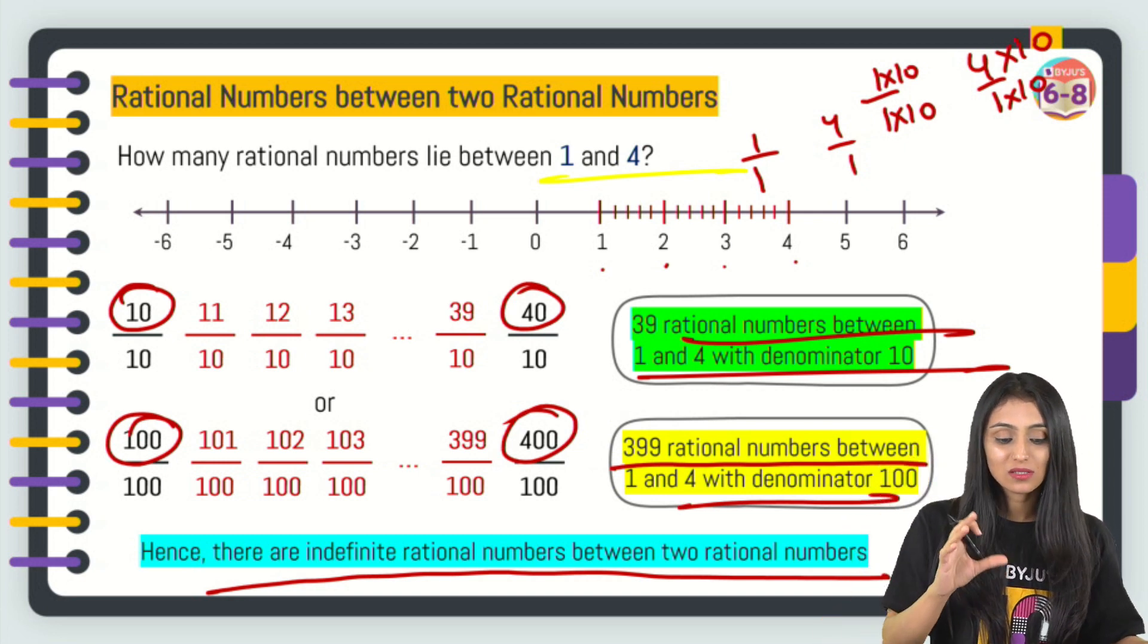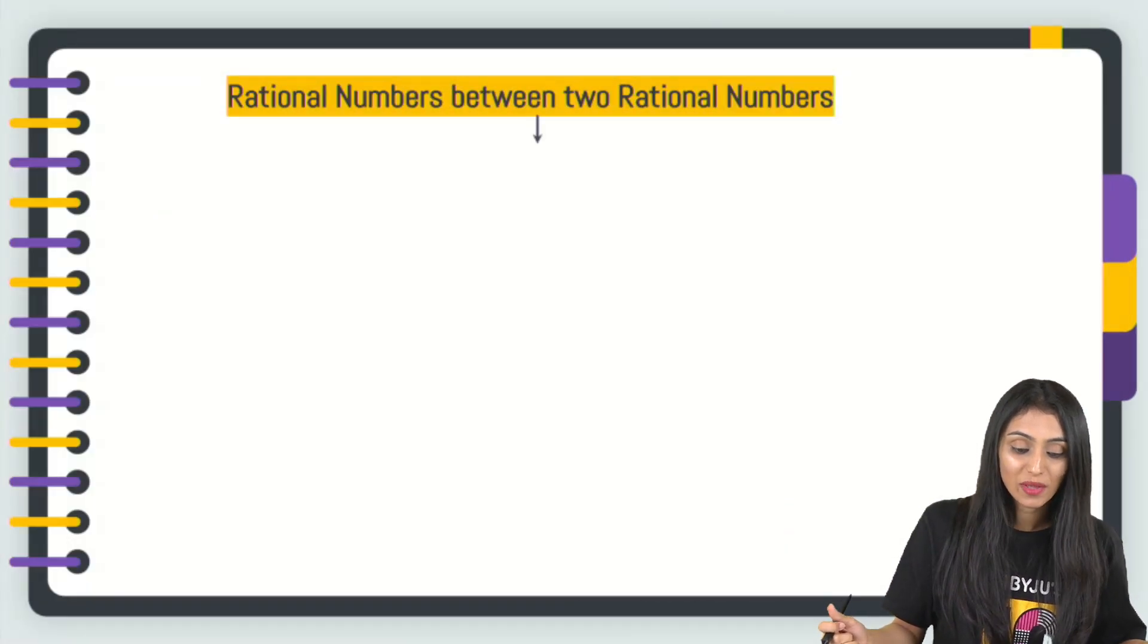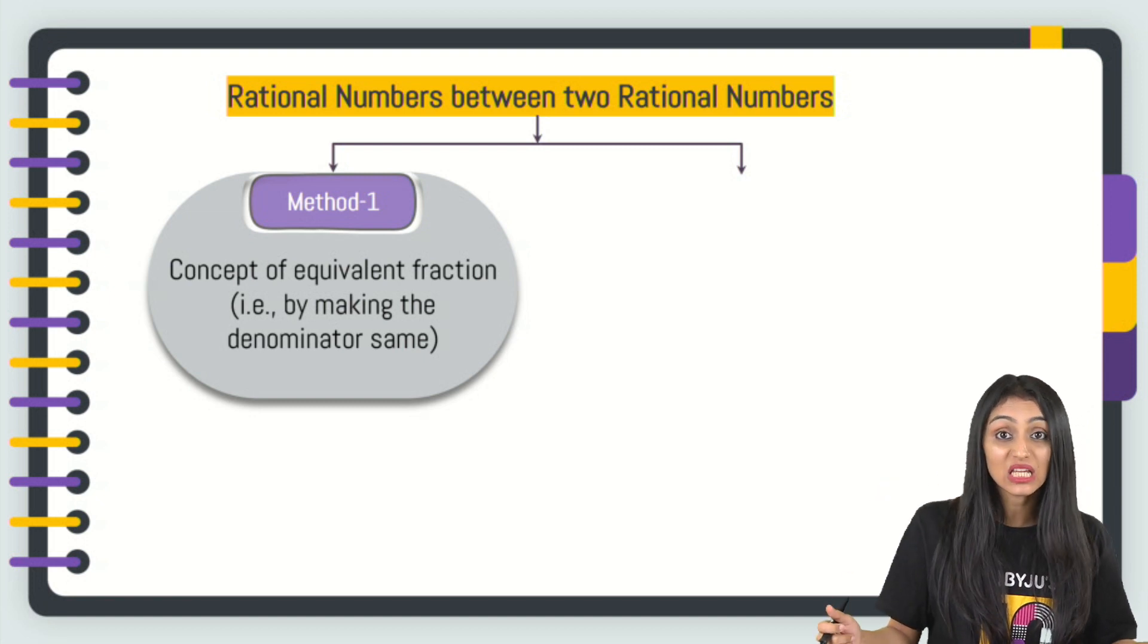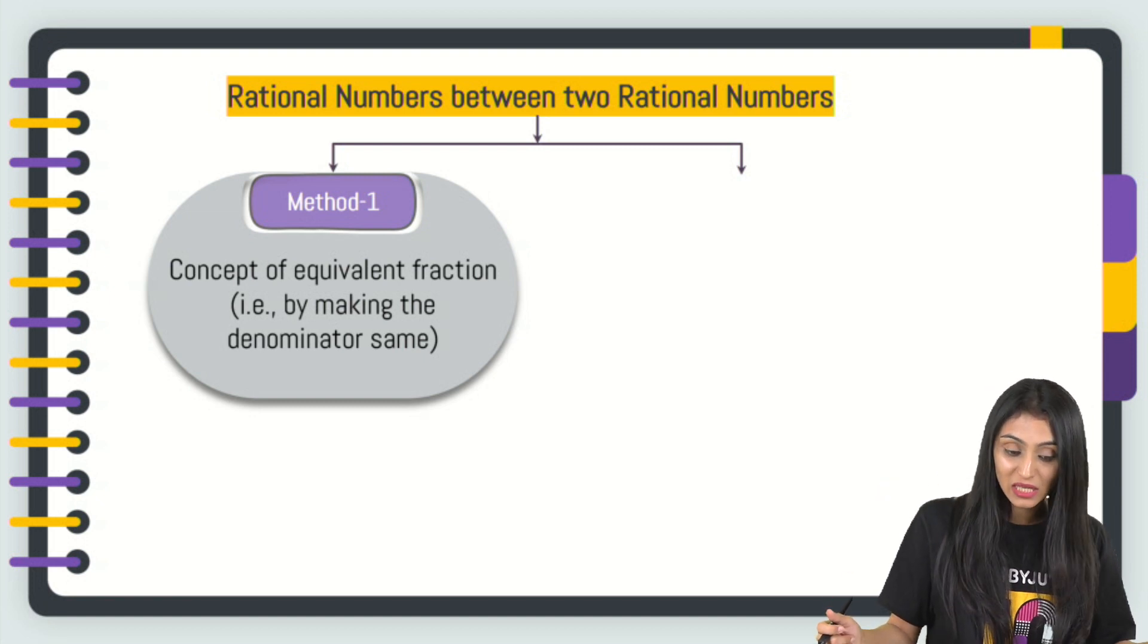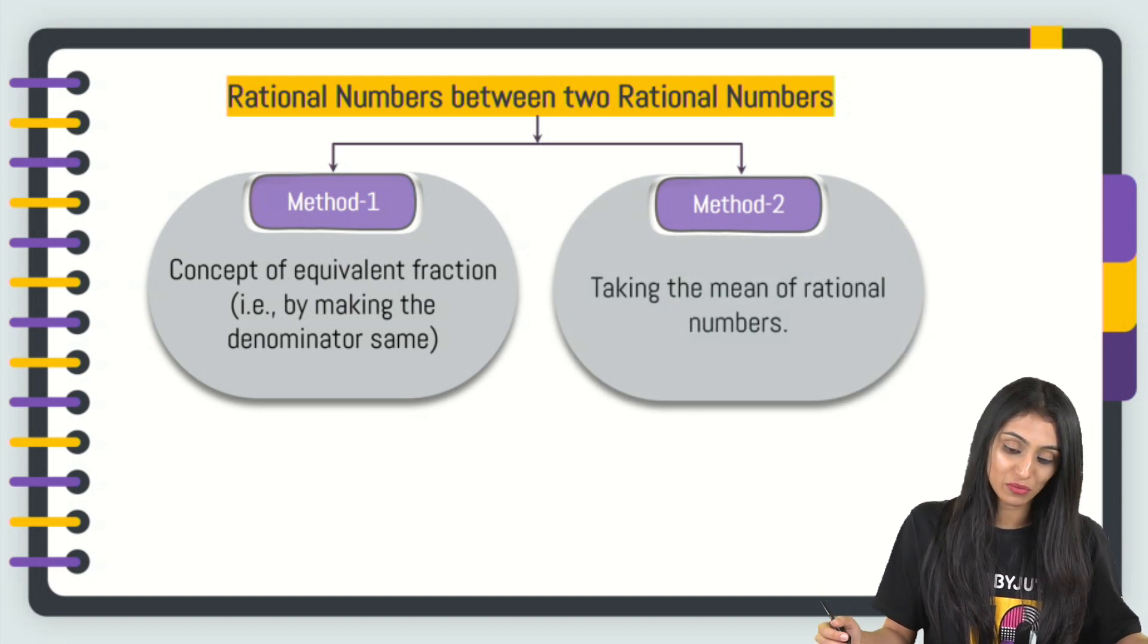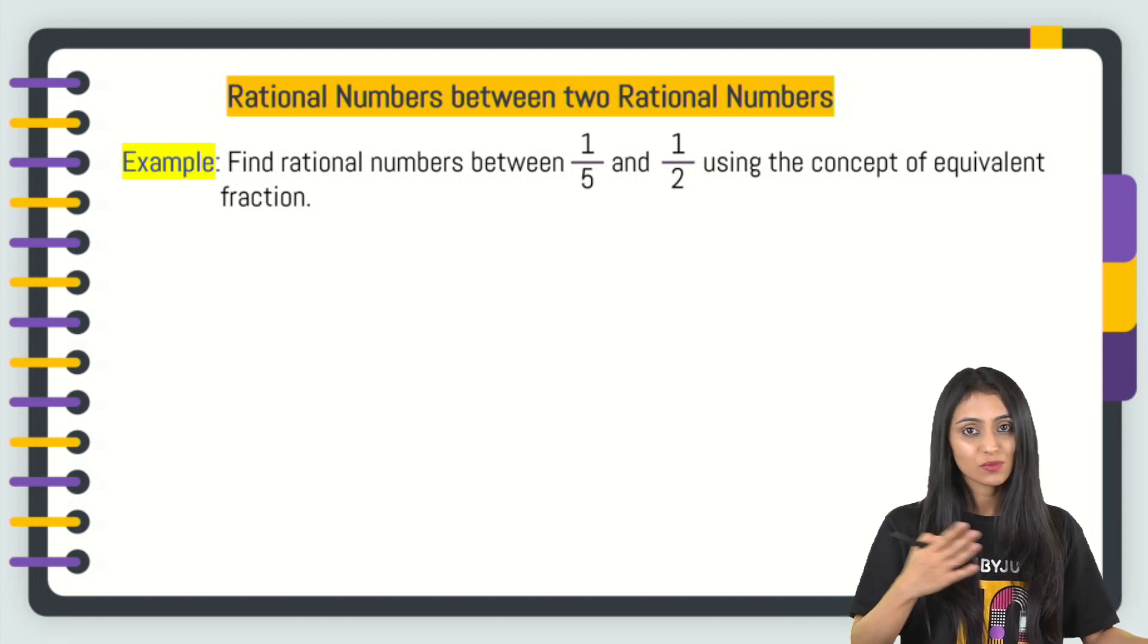Now, this is one of the ways that we have already learned about. There are two methods to find this out. One is the method that we just talked about, concept of equivalent fraction by making the denominator same. Another method is taking the mean of rational numbers. Now let's try out a question. I'll be trying this with both the methods.